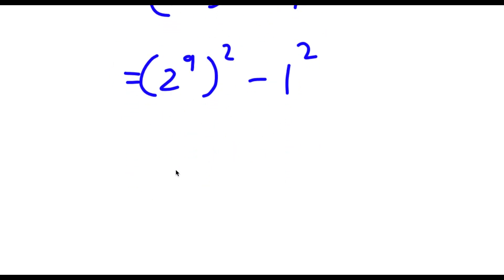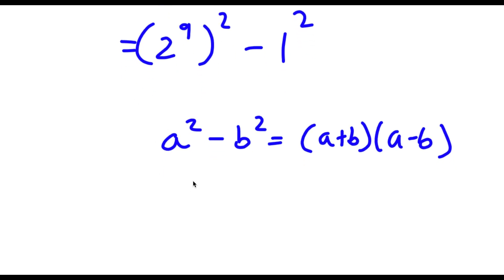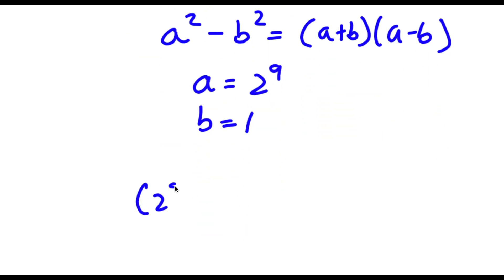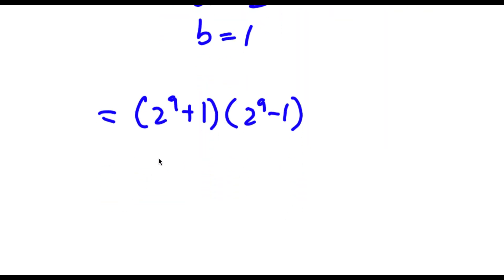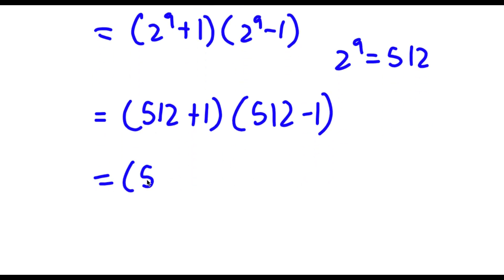So now I have 2 to the power of 9, to the power of 2, minus 1 to the power of 2. If I have something in the form a squared minus b squared, this is equal to a plus b times a minus b. In this case, a is 2 to the power of 9 and b is 1. So I have 2 to the power of 9 plus 1, times 2 to the power of 9 minus 1. Since 2 to the power of 9 equals 512, this becomes 513 times 511.